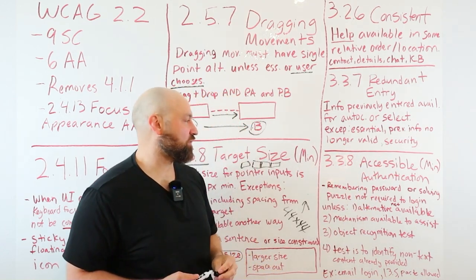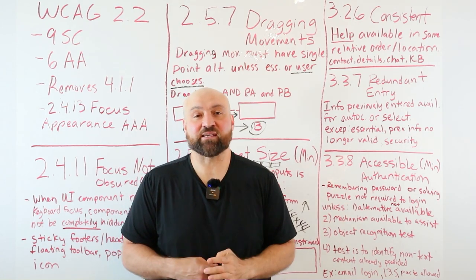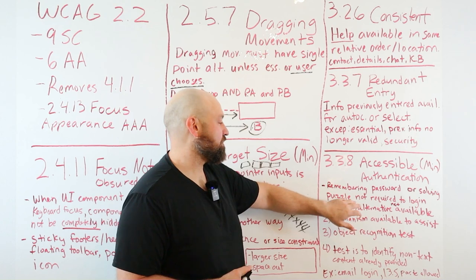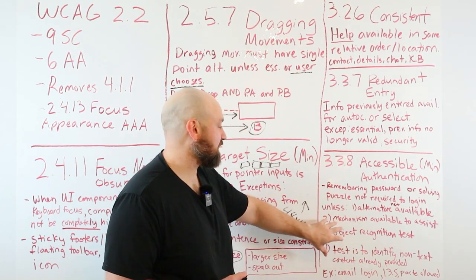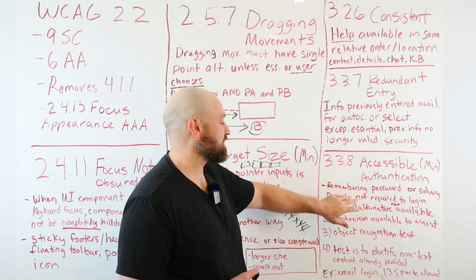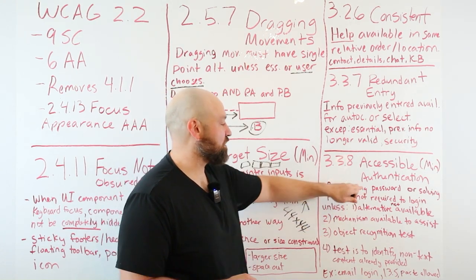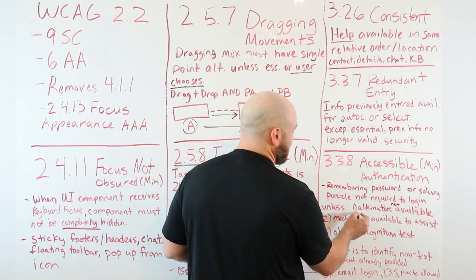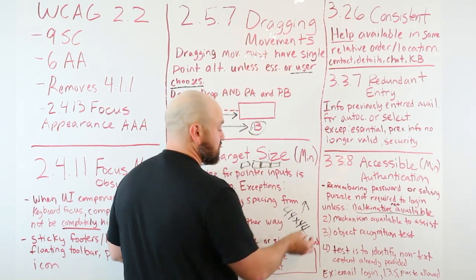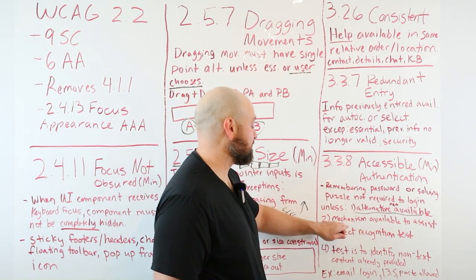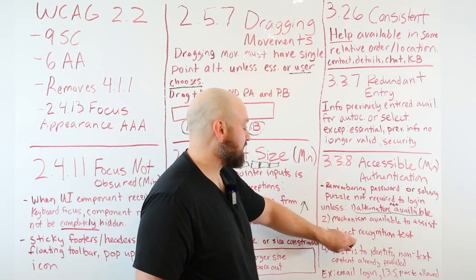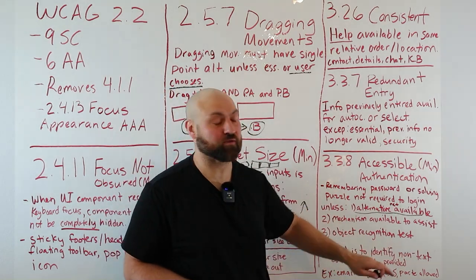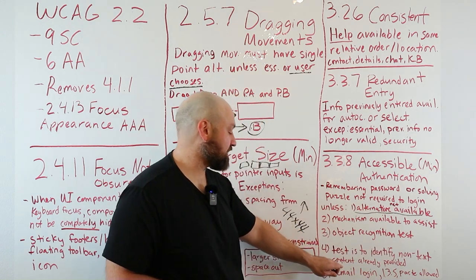With 3.3.8, we are referring to accessible authentication, making sure it's accessible for someone to log in basically. If there are any cognitive function tests, we make sure that remembering a password or solving a puzzle is not required to log in. That would be the cognitive function test, remembering a password or solving a puzzle. We want to make sure that is not necessary to log in unless there is an alternative way to log in. You can have a cognitive function test, but provide an alternative. Two, there's a mechanism available to assist with the cognitive function test. Three, an object recognition test is okay. And four, the test is to identify non-text content already provided by the user, though I think this is a more remote exception.